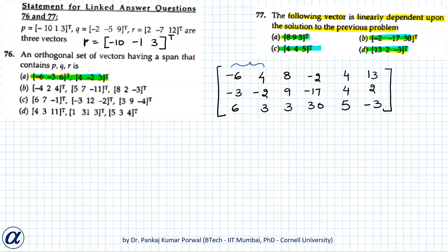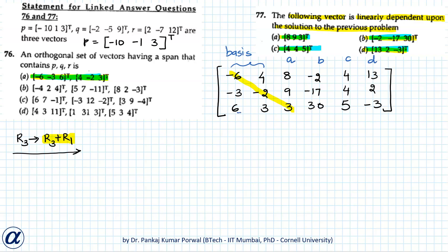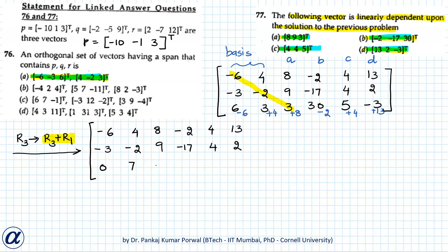To identify this, we construct a matrix where the first two columns are our basis vectors and the remaining columns correspond to the vectors in options A, B, C, and D respectively, then transform it to row echelon form. The first row operation is R3 → R3 + R1, where R3 + R1 leads to: 0, 7, 11, 28, 9, 10 in the updated third row.